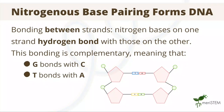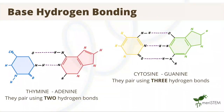Now we are going to talk about how the nitrogenous bases from one strand undergo hydrogen bonding with the bases from another strand, which forms the overall double-stranded DNA. This bonding is complementary, meaning that guanine binds with cytosine, and thymine binds with adenine. The reason this occurs is because thymine and adenine can bond together with two hydrogen bonds, whereas cytosine and guanine bond together with three.